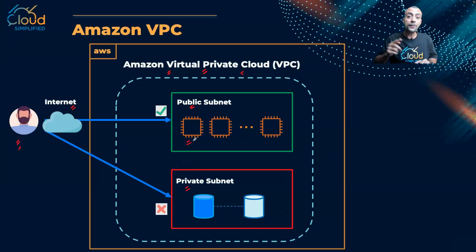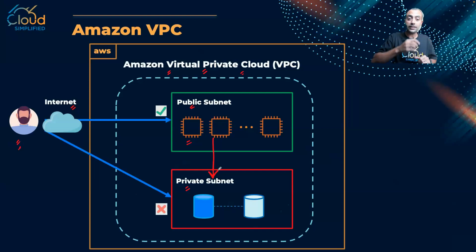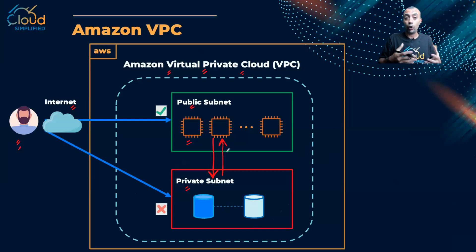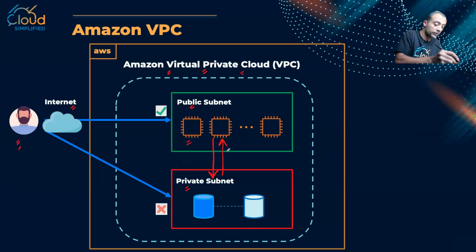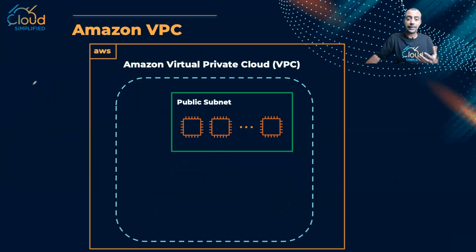To protect resources like my database, I don't want clients coming from the outside to access it directly. So the user lands on the web server inside my public subnet, and then the web server sends an internal communication within my VPC to the database. The database replies back with the data needed, and then I respond back to the client. That's the concept of public subnet and private subnet.